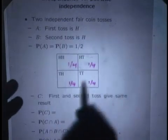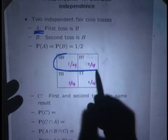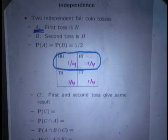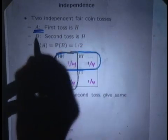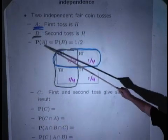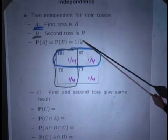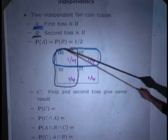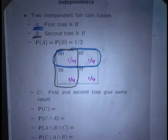One event is that the first toss is heads — this is the blue set here. Another event is that the second toss is heads — this is the black event here. Are these two events independent? If you check it mathematically, yes. Probability of A is probability of B is 1/2. Probability of A times probability of B is 1/4, which is the same as the probability of A intersection B. So we have just checked mathematically that A and B are independent.